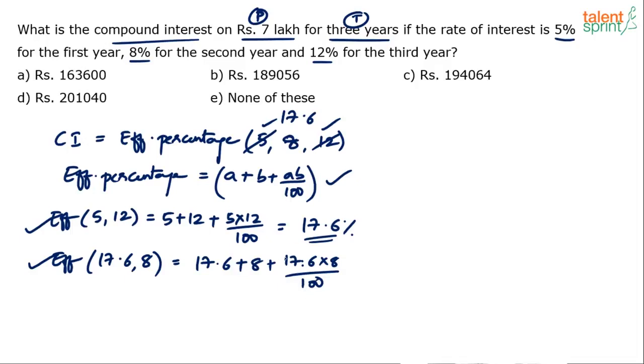So anyway, the effective of 17.6 and 8 is going to be 17.6 plus 8 plus 17.6 into 8 by 100. Now do this calculation. 17.6 into 8 or basically 176 into 8. 17.6 plus 8 is 25.6. That is very easy. How do you do this is the question mark here. So 17.6 into 8 then divide by 100. So 17 into 8 plus 0.6 into 8. What is 17 into 8? That is going to be 136. 10 into 8 is 80, 7 into 8 is 56, 80 plus 56 is 136. 0.6 into 8, so 6 into 8 is 48, 0.6 into 8 is 4.8. So this is going to be 136 plus 4.8, 140.8.